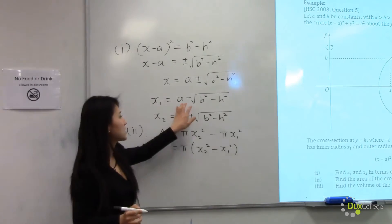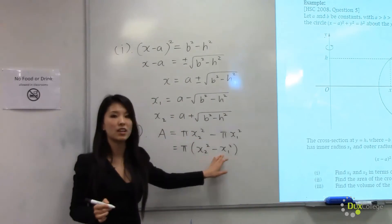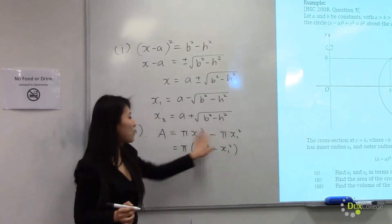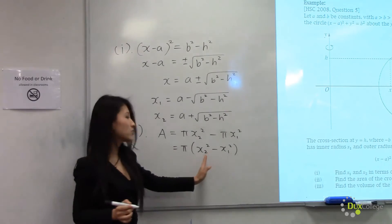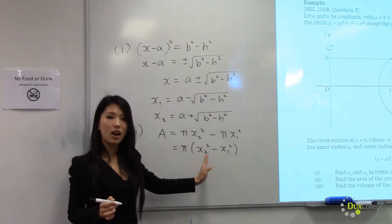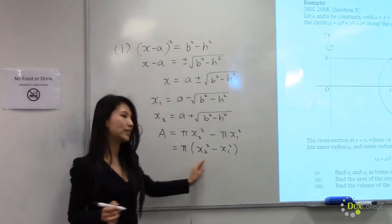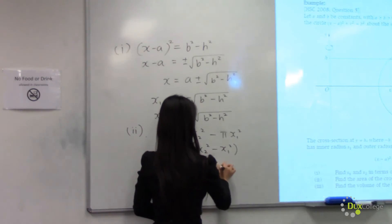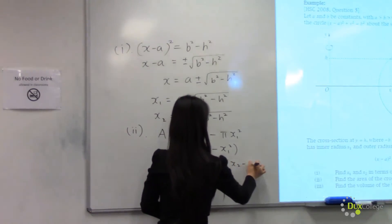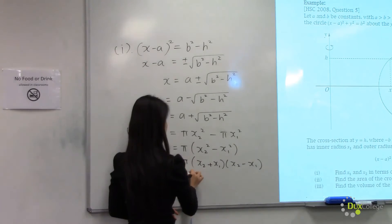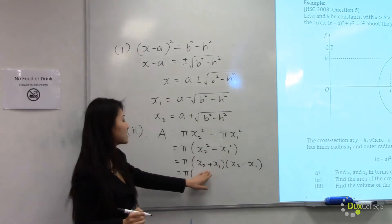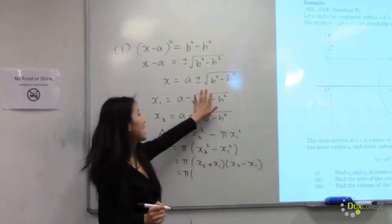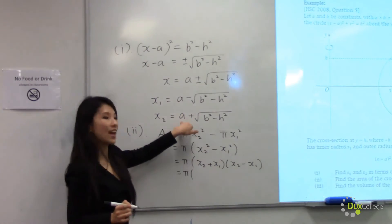Instead of doing straight substitution, we should simplify this algebraic expression by taking pi out. Notice this is a difference of two squares, so we can split this into (x2 minus x1) times (x2 plus x1). When we add x2 and x1, the square root parts cancel out and we get a plus a, which is 2a.